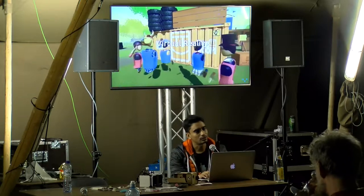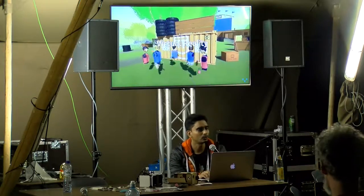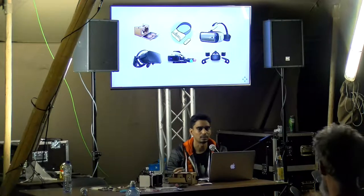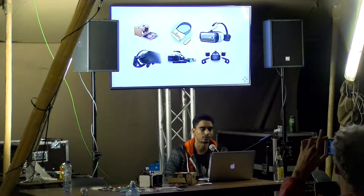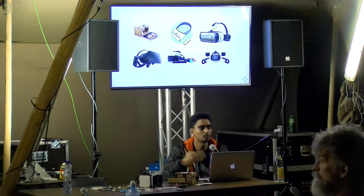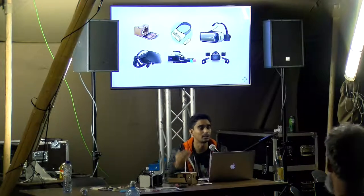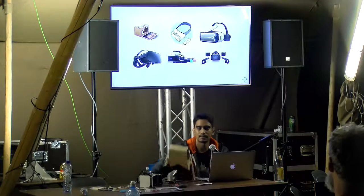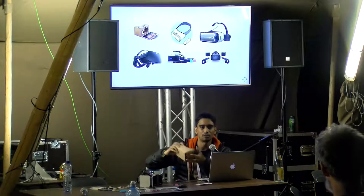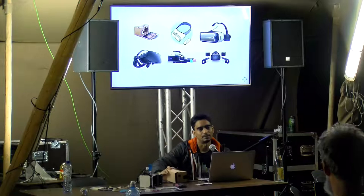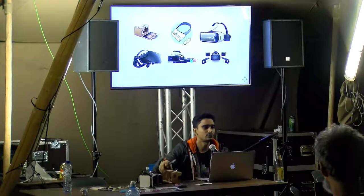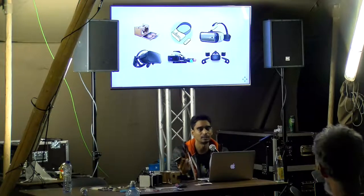One thing I mentioned about virtual reality is that we need a special kind of headset. There are two types of headsets available in the market today. The first kind are those we use with mobile devices — we put the mobile phone inside the headset. This is one example: the Google Cardboard. We put the mobile phone inside and when we put it on, we experience virtual reality. The tracking happens with the help of all the sensors and hardware available in the mobile.